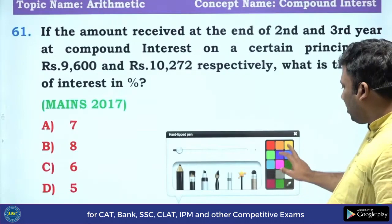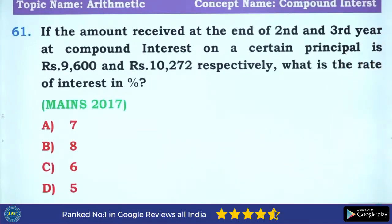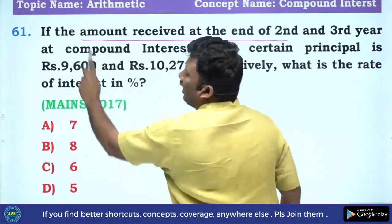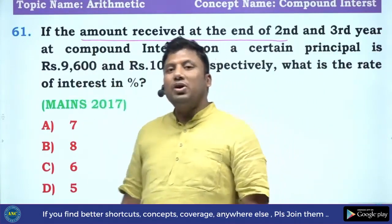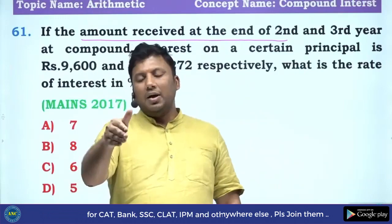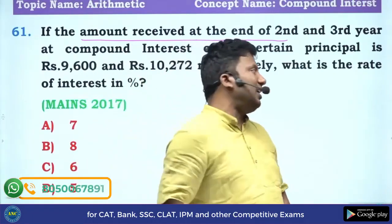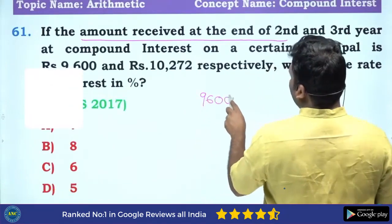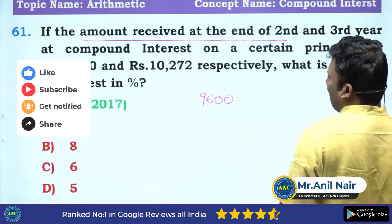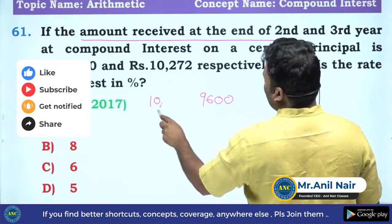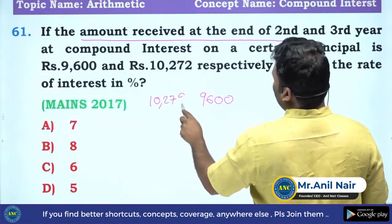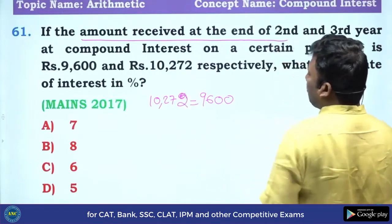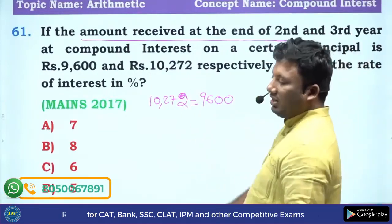Next question — this is the main question. If the amount received at the end of the second year becomes the principle for the third year: the initial value is 9600 and the final value is 10,272. What is the rate of interest?